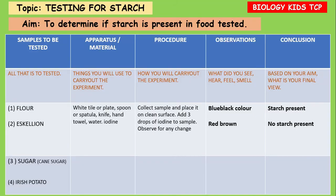The topic is testing for starch, and we are going to determine if starch is present in a couple of food substances. That's pretty much our aim. The table here shows the samples to be tested on the left, the apparatus and materials — those are the things we're going to be using to carry out the lab — and the procedure tells us how we're going to execute the lab.